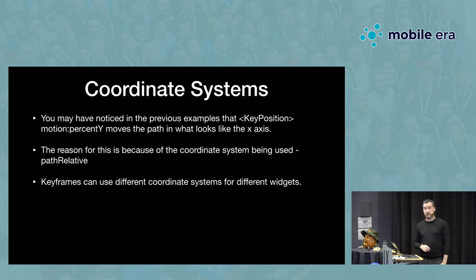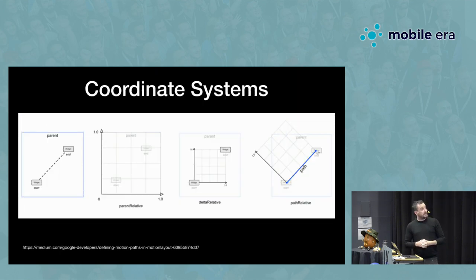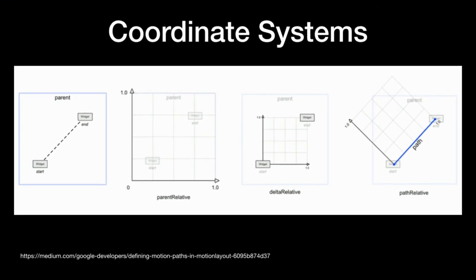There are three different coordinate systems you can have with your animations. ParentRelative: 0 to 1 is like the width or height of the screen, so 0 is on the left-hand side, 1 is all the way to the right. DeltaRelative is relative to the start and end positions of the widgets themselves — 0 is where the start position is and 1 is where the end widget is.